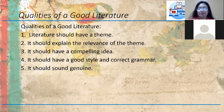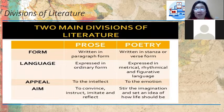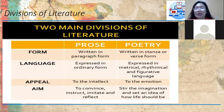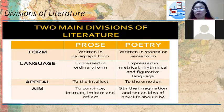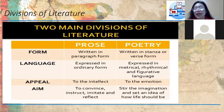The two main divisions of literature are prose and poetry. In terms of form, prose is written in paragraph form, whereas poetry is written in stanza or verse form. In terms of language use, prose is expressed in ordinary form making use of sentences and paragraphs, whereas poetry is expressed in metrical, rhythmical language and makes use of figurative language.